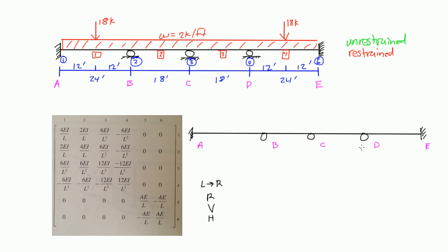Going left to right starting with rotational degrees of freedom, unrestrained first: at A there's a fixed end, so that rotational degree of freedom is restrained. At roller B, rollers do not support a moment, so the rotational degree of freedom there is unrestrained — I'll call that theta one. At C, same thing, that's theta two. At D, that's theta three.